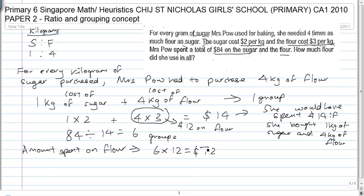She spent $72 on flour. I hope you understand this portion because I'm working in terms of groups. First, I find the cost of one kg of sugar and four kg of flour — that's the value of one group. Since she spent $84 in total, I take $84 divided by the value of one group to find how many groups she actually bought. She spent six groups of one kg of sugar and four kg of flour, and each group, four kg of flour cost $12. Since there are six groups, she must have spent 6 × 12 = $72 on flour.